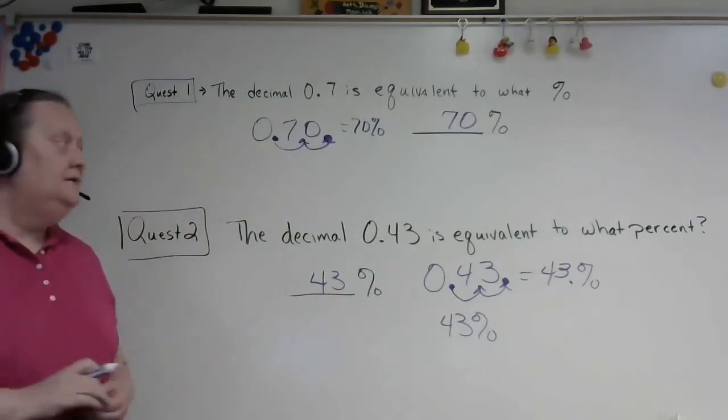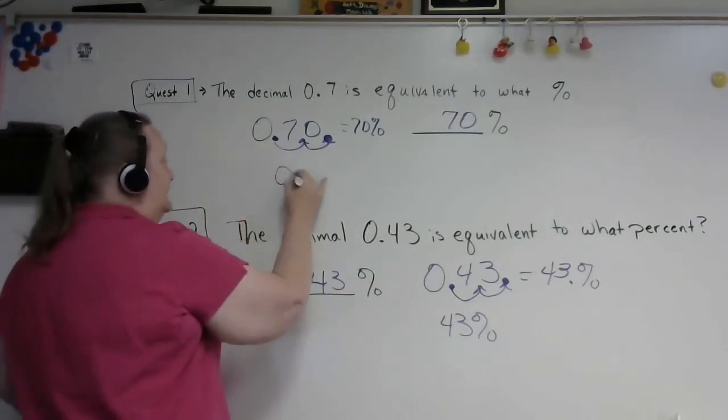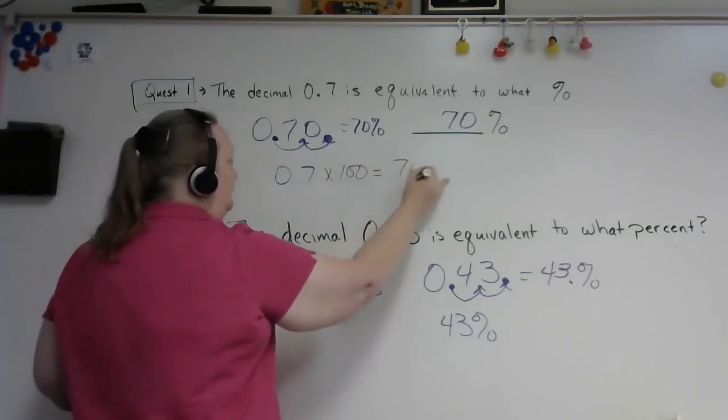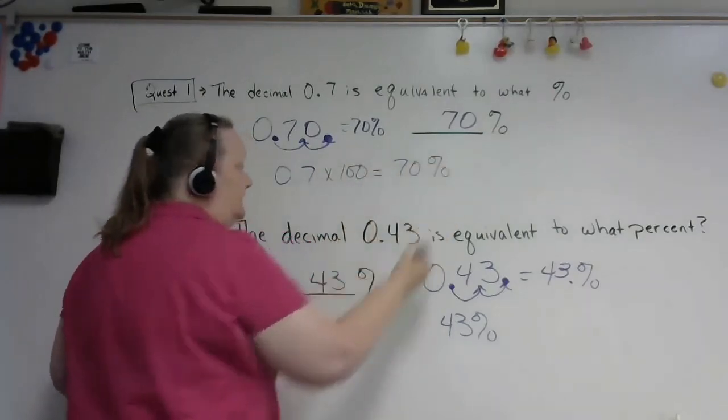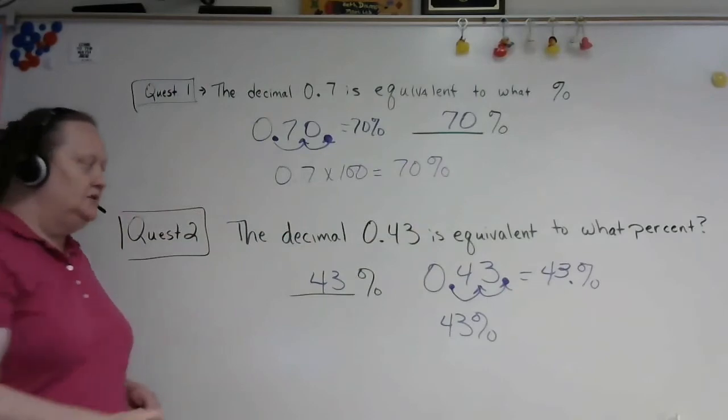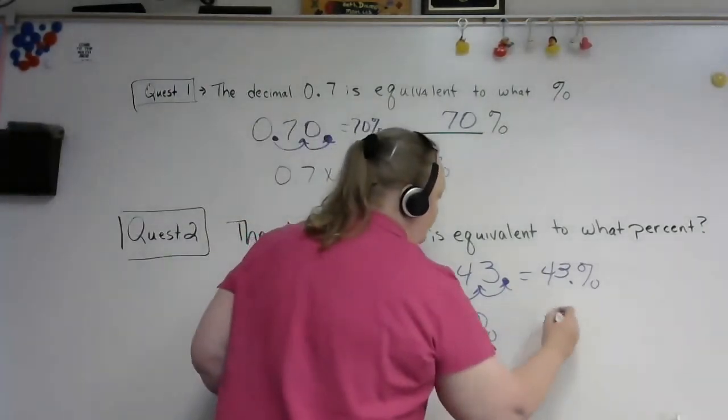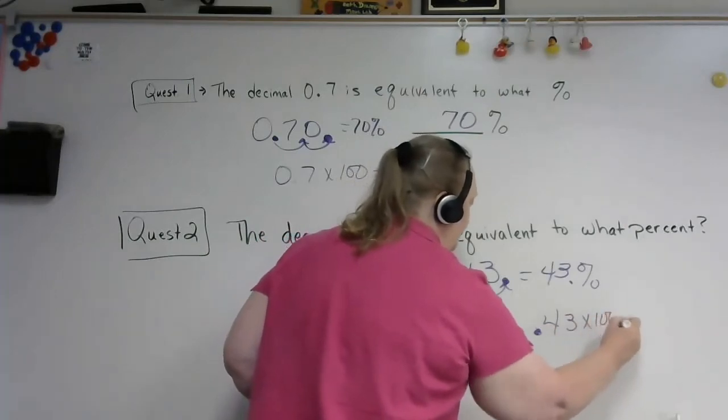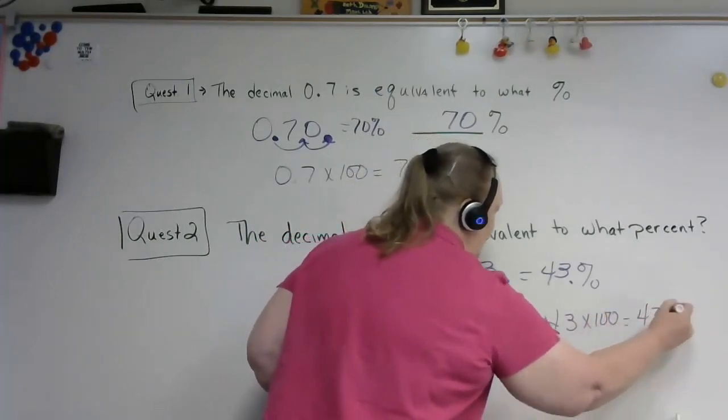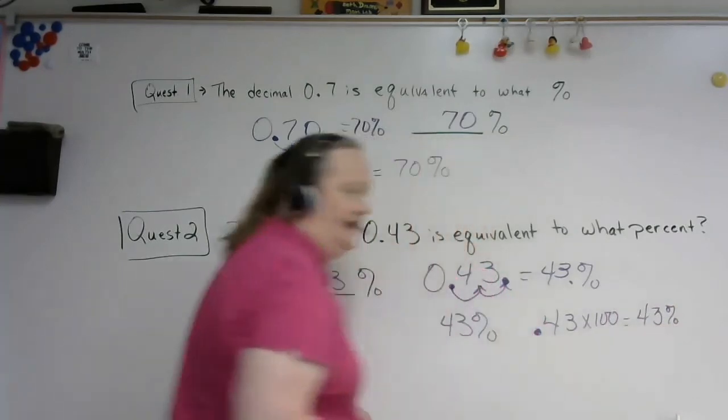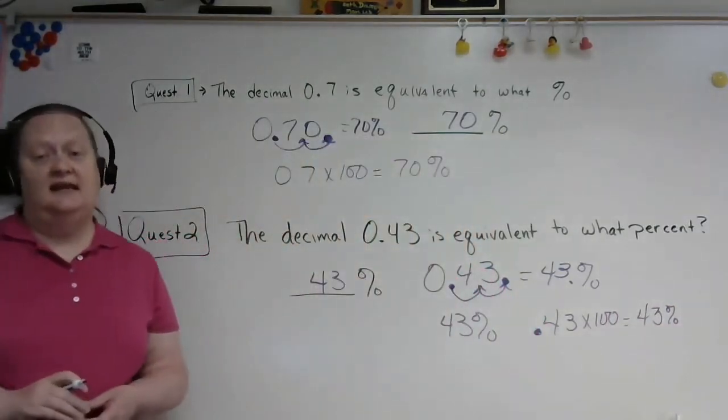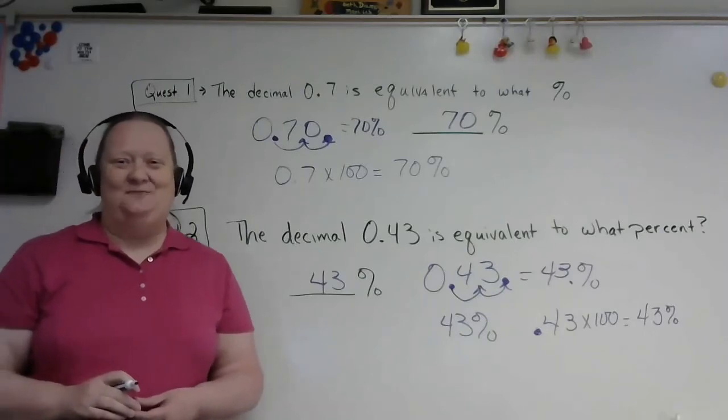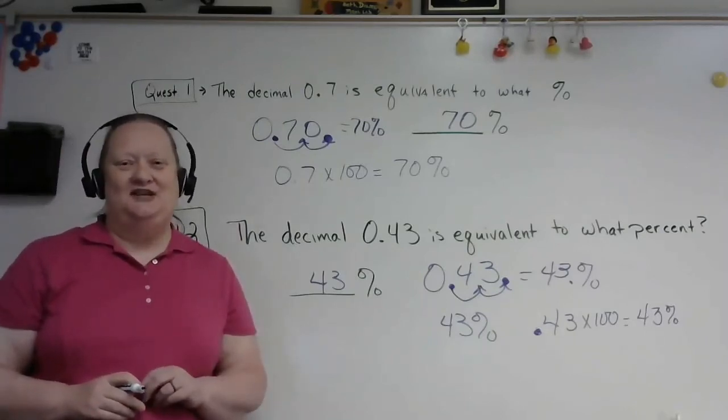Another way that we could do both of these problems is to take the decimal and multiply by 100. That would give me 70, and then add the percent, which would give me 70%. Or take the 0.43 times 100, and that would give me 43, and then add the percent sign. So either method is a good method, and you want to follow what your teacher did. And so that's questions one and two.